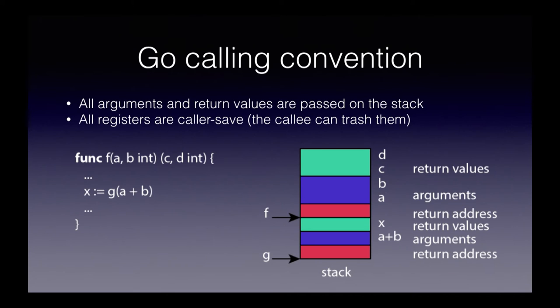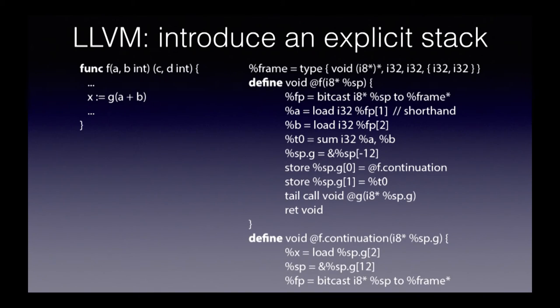The Go calling convention is a little unusual. Space for the return values and the parameters are pushed on the stack on a function call, along with the return address. So if we have a function that takes two parameters and returns two values, we allocate space for the return values, then the parameters, then the return address. Since we can't do this on the LLVM sandbox stack, we generate code that performs these operations explicitly and pass a stack pointer. There's a function F that takes a stack pointer, and we allocate that explicitly and push the parameters and return values onto that stack.